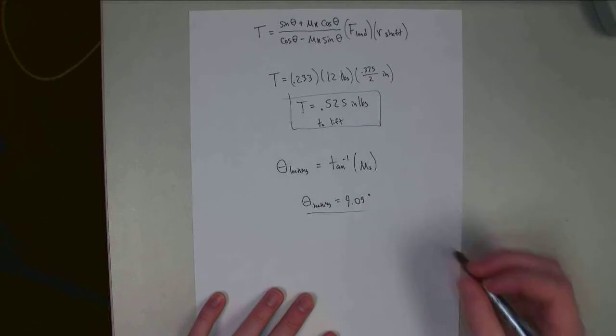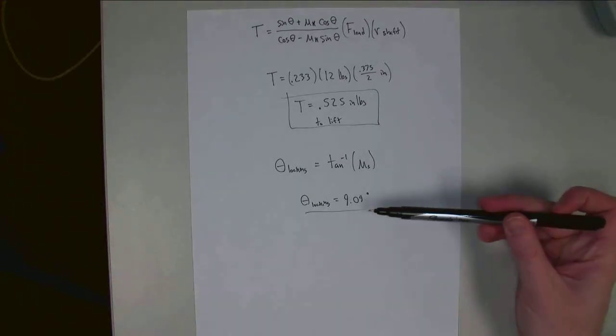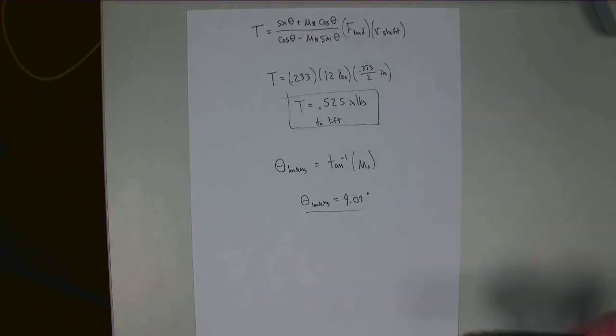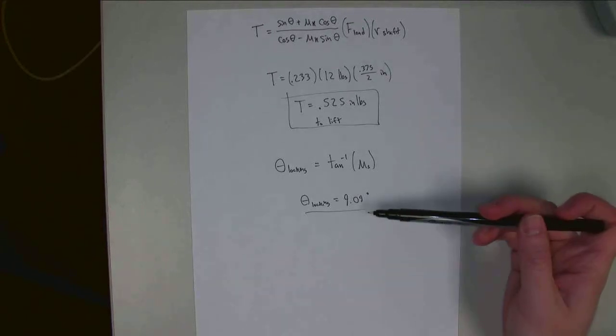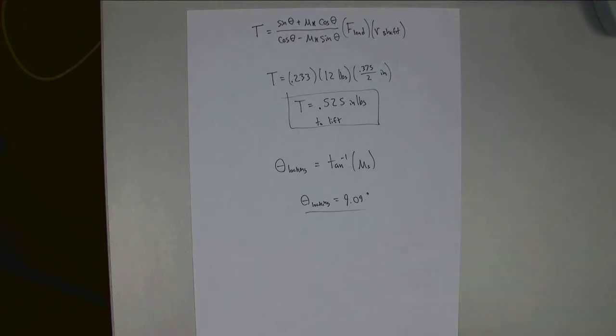Any lead angles above this number are not self-locking and would fall back down. Anything below this is a self-locking system. If you let go of the torque, it will simply stay where it is.